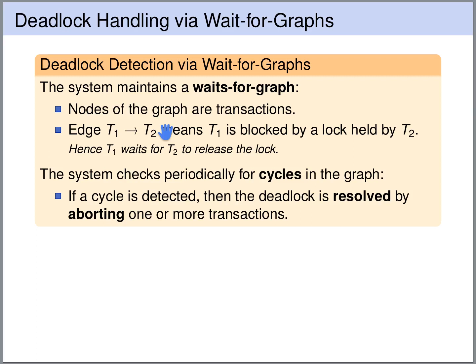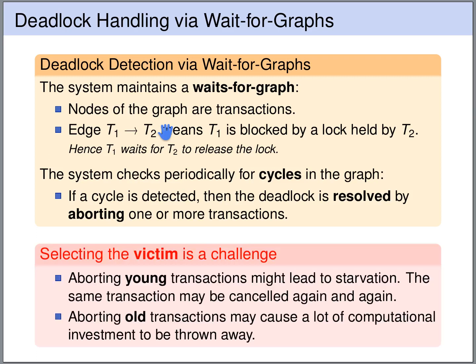However, this is not as easy as it sounds because the selection of the victim is challenging. If we are selecting young transactions for abortion, this might lead to starvation — we might abort the same transactions over and over. If we are selecting old transactions for abortion, then we are throwing away a lot of computational investment.